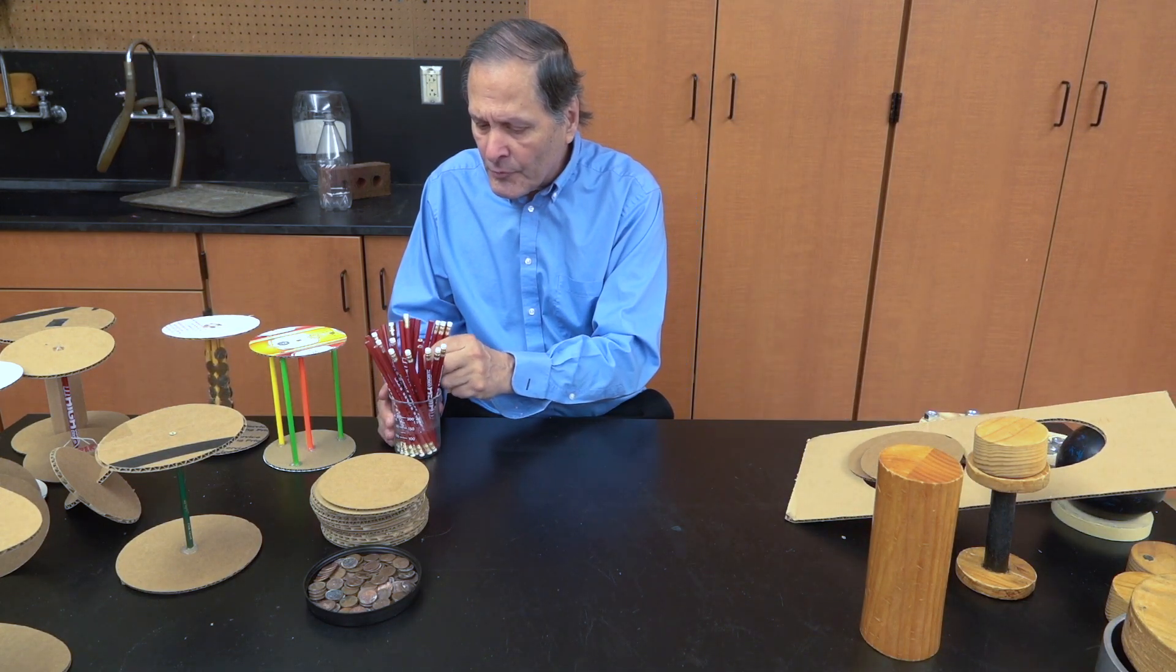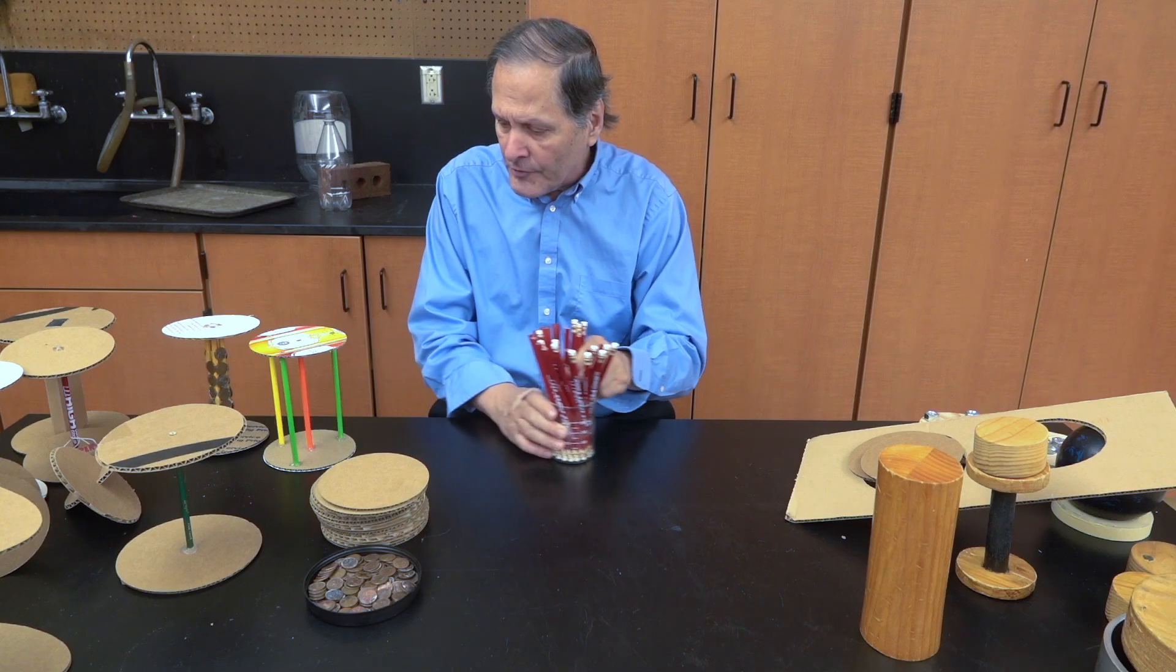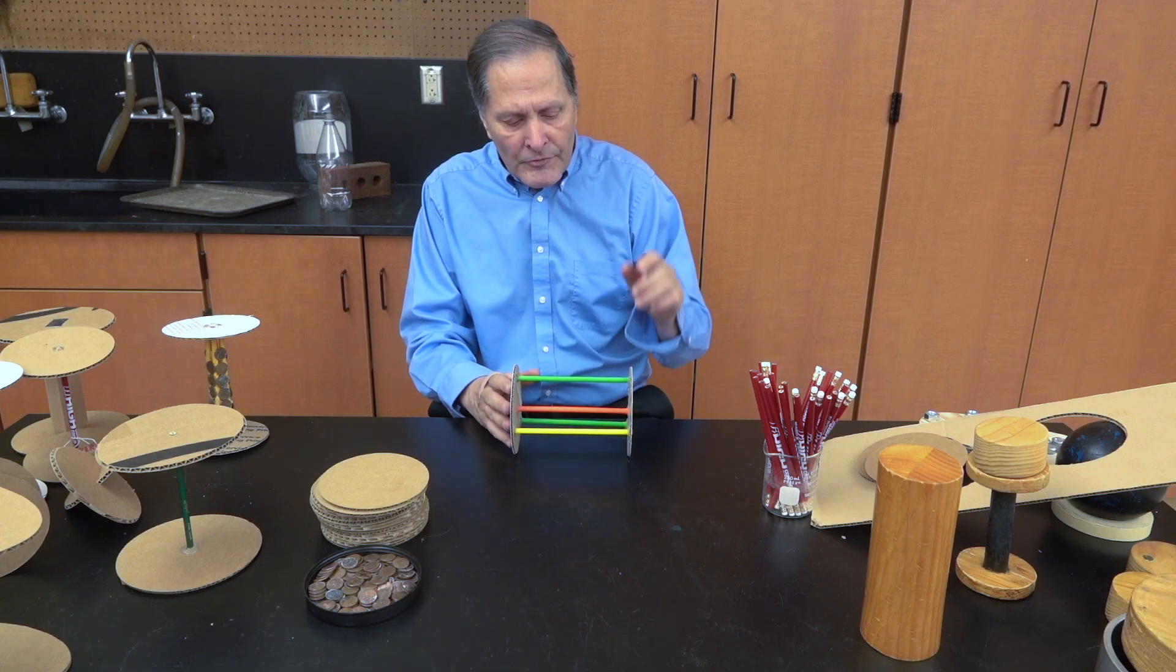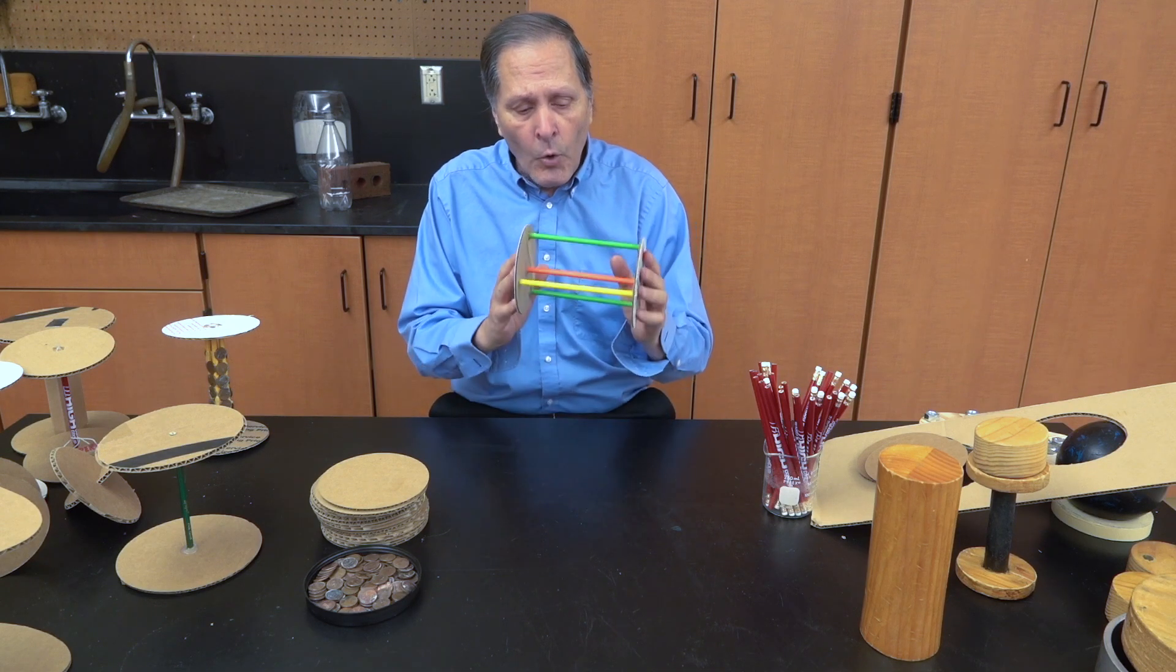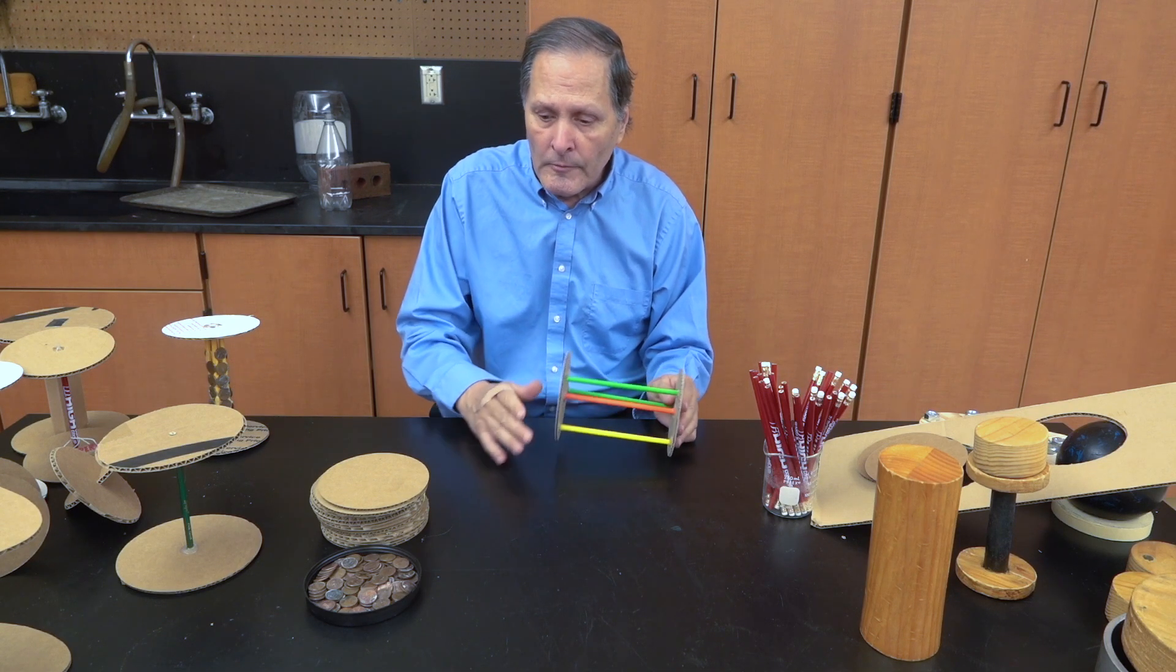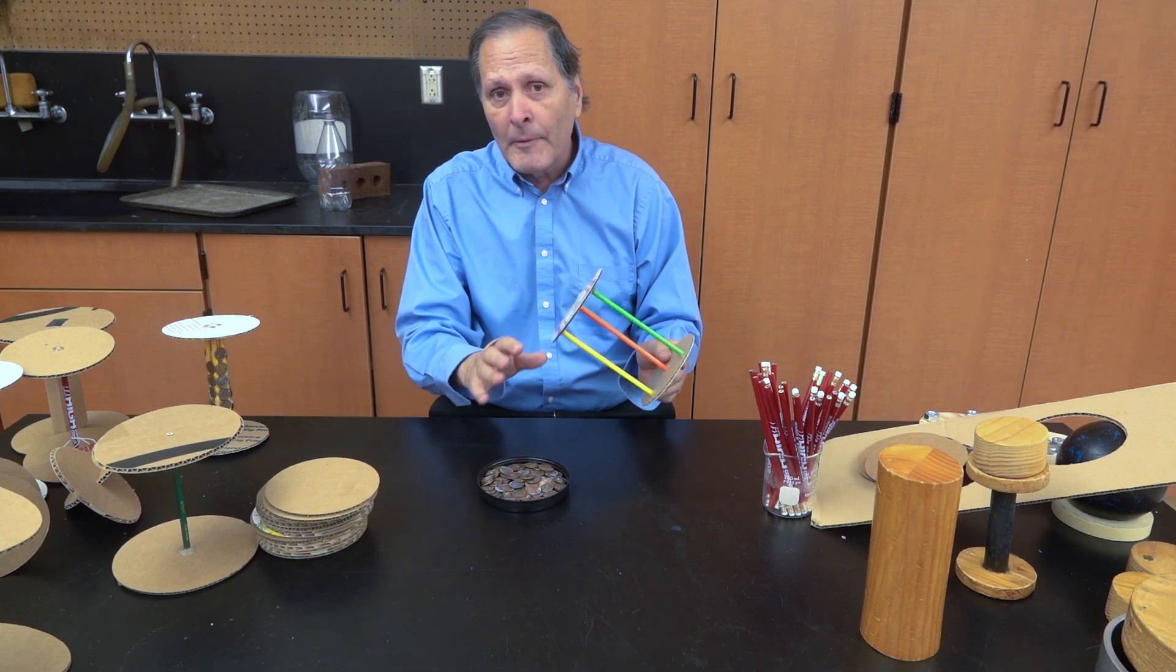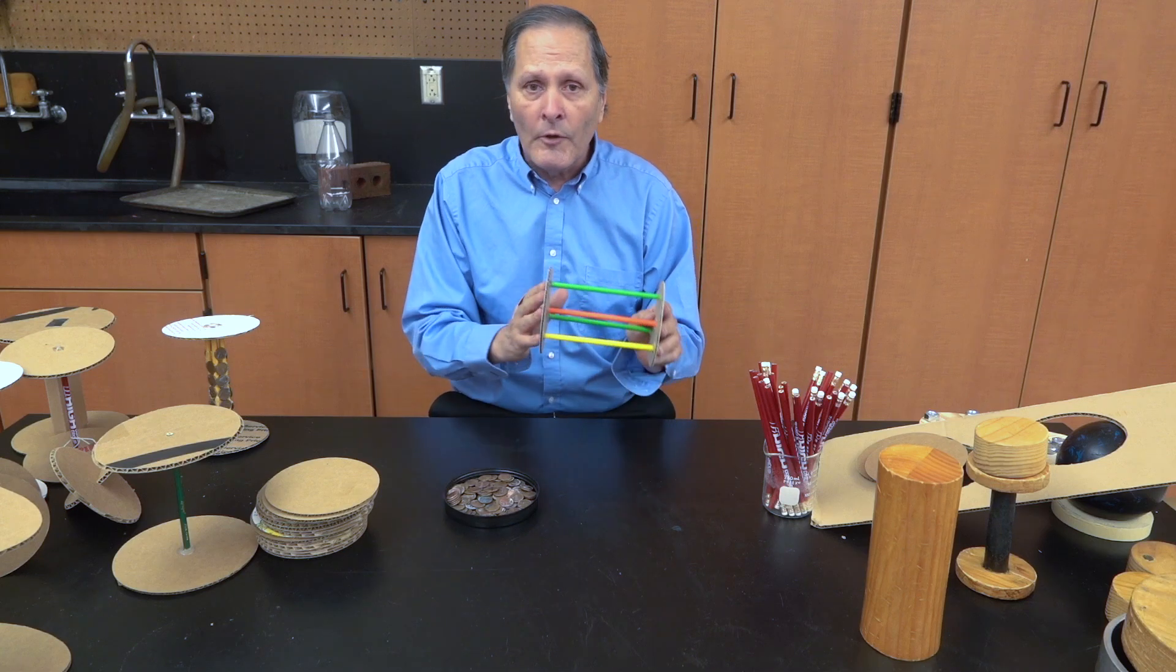We can then tie those wheels together using some pencils, so we end up with something like a wheel and axle. The investigation for students is to try and get this to roll as quickly or as slowly down that ramp as possible. They can add pennies at various positions on here, either by taping them or gluing them, and seeing what the effect is.